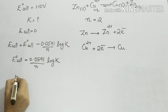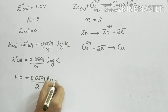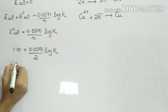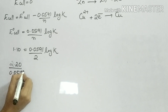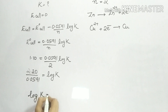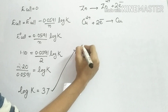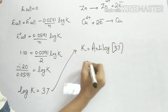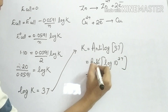Substituting values: 1.10 equals 0.0591 divided by 2, times log K. E0 cell equals 0.0591 by n log K.